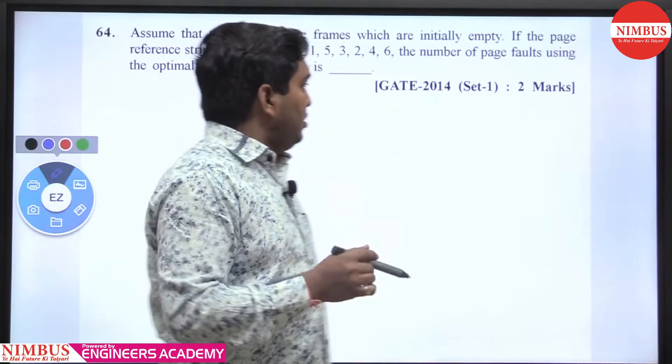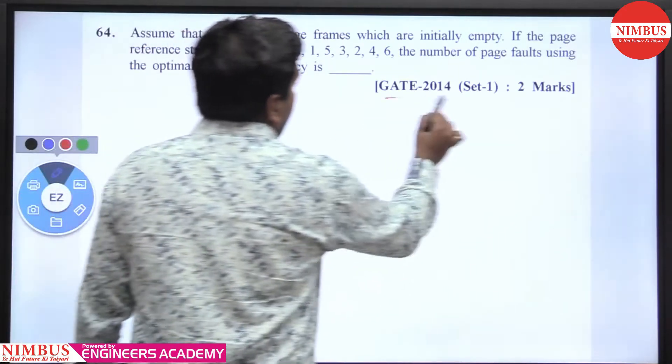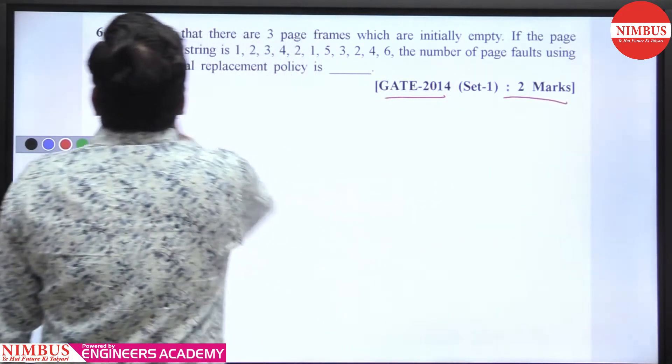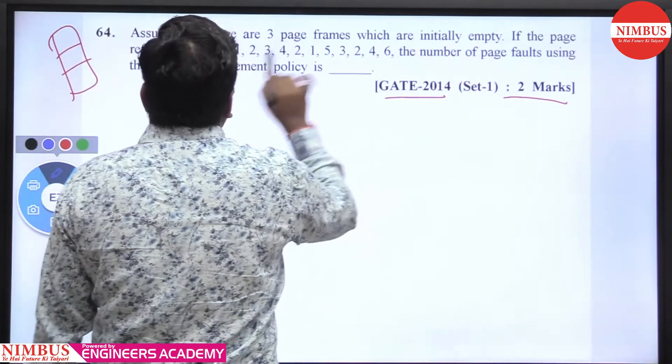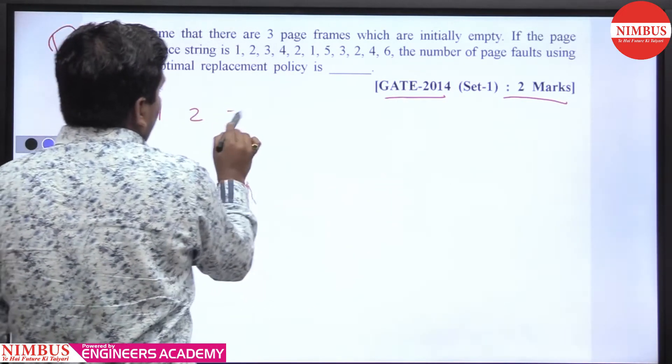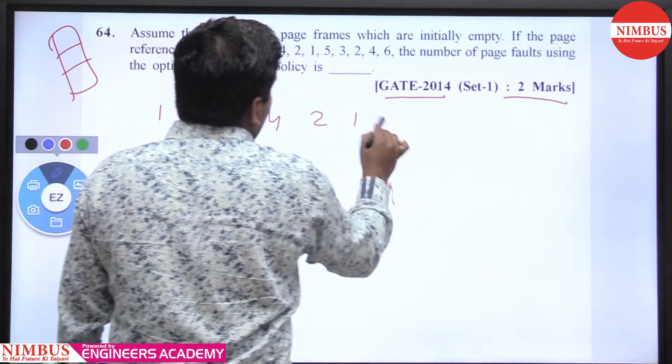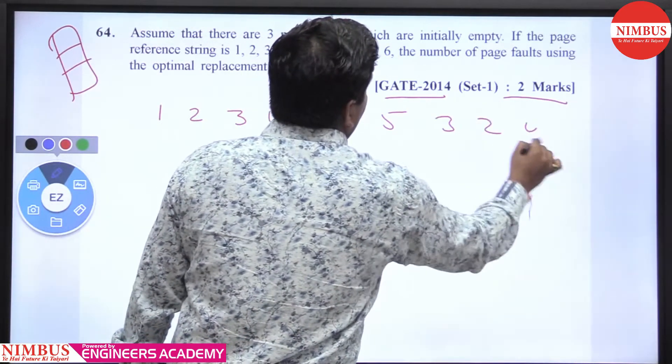Hello students, this is a question from GATE 2014 worth 2 marks. Assume that there are 3 page frames which are initially empty. If the reference string is 1, 2, 3, 4, 2, 1, 5, 3, 2, 4, 6.